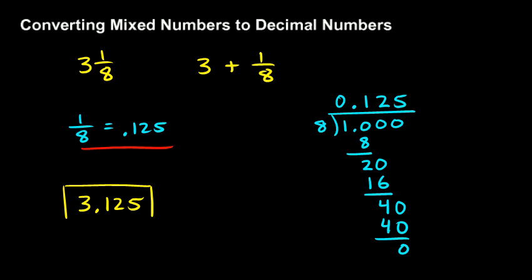And that's my answer. 3 and 1 eighth has been converted to a decimal number, 3.125.